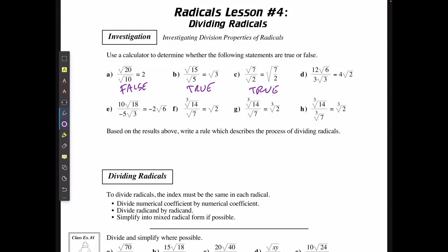Is 2 root 6 divided by 3 root 3 the same as 4 root 2? This is true. Is 10 root 18 divided by negative 5 root 3 the same as negative 2 root 6? That is true. Is the cube root of 14 divided by the square root of 7 equal to the square root of 2? That is false. Is the cube root of 14 divided by the square root of 7 the same as the cube root of 2? This is also false. Is the cube root of 14 divided by the cube root of 7 equal to the cube root of 2? This is true.